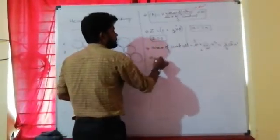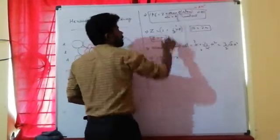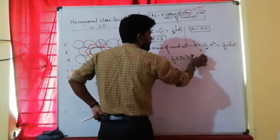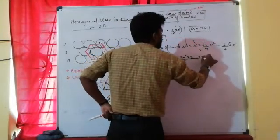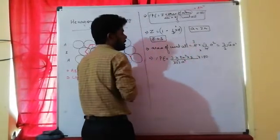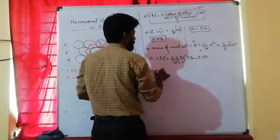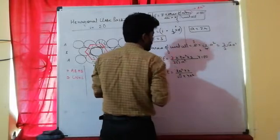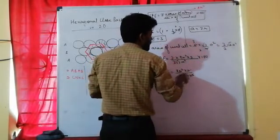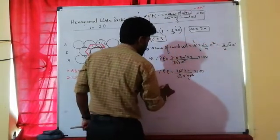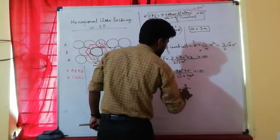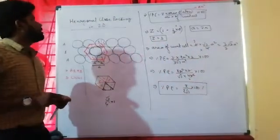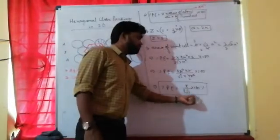Now putting values into the formula: percentage packing efficiency = 3 × πr² / [(3√3/2) × a²] × 100. Since a = 2R, we substitute: the 3s cancel, a² = 4r², r² cancels, giving π/(2√3) × 100%. So percentage packing efficiency = π/(2√3) × 100%.